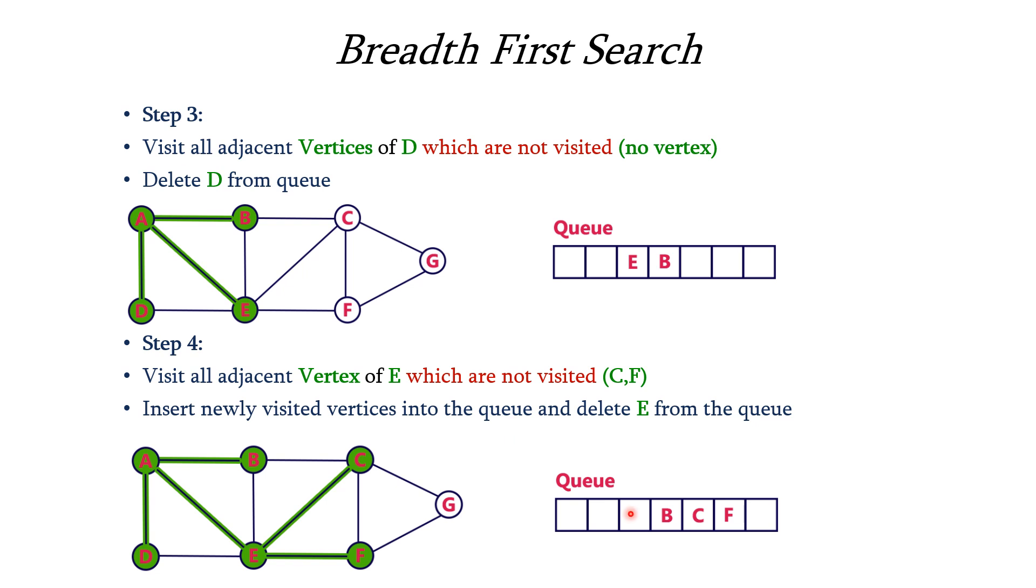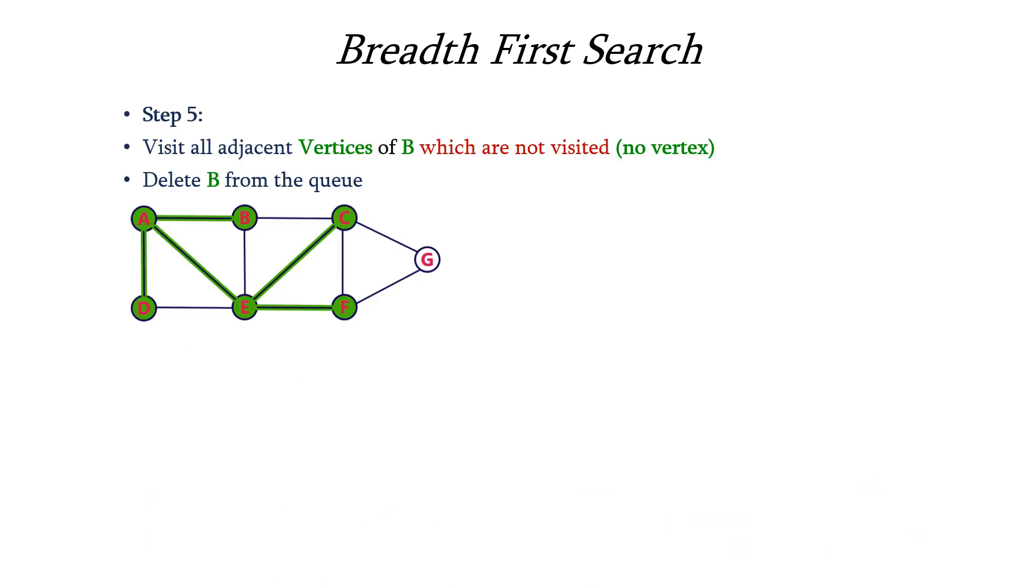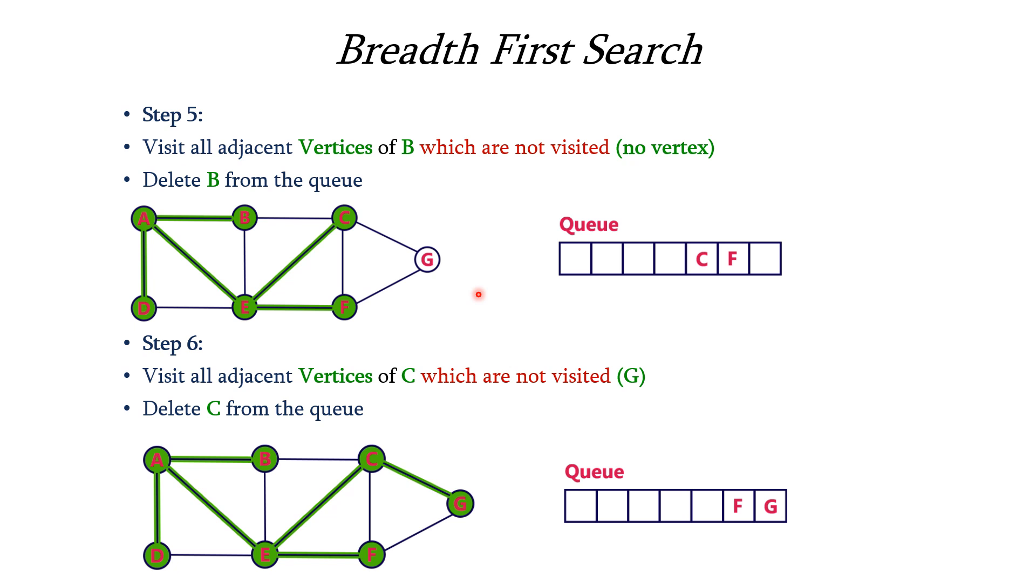Now considering B, B is here so B's adjacent vertices are all visited so we have to remove B from the front of the queue. So here B has been removed and next we have C. So C's adjacent vertex, we have one vertex which is adjacent to it as not visited that is G, so we have to insert G into the queue and delete C from the queue.